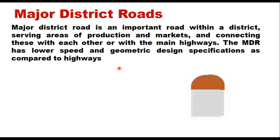Major district roads are important roads within a district, serving areas of production and markets and connecting these with each other or with the main highways. Major district roads have lower speed and geometric design specifications as compared to state highways or national highways, and these roads are given the brown color — their kilometer stones have a brown cap.